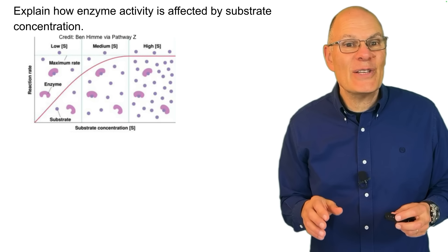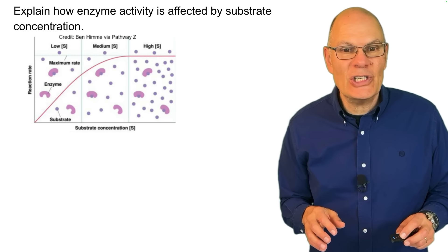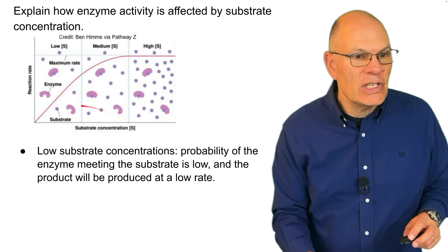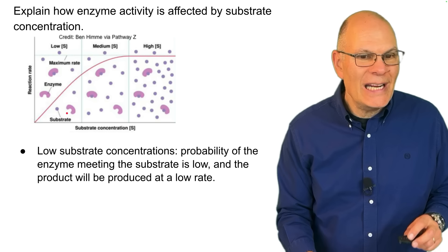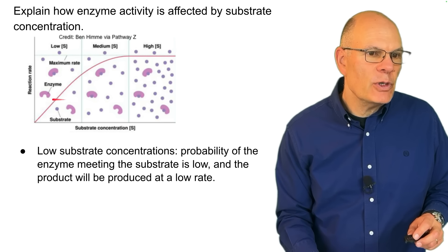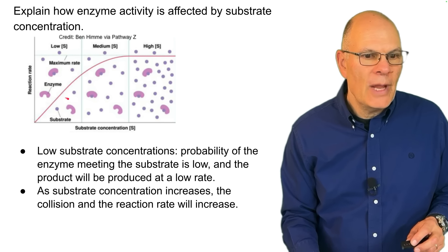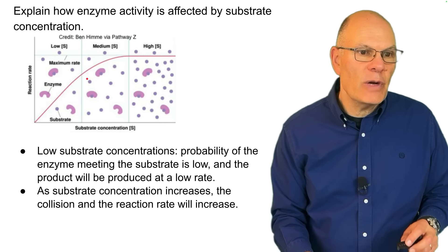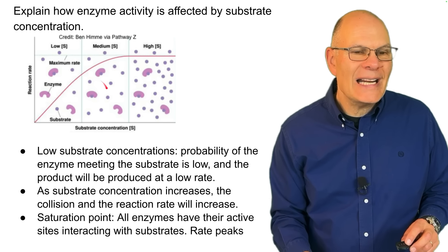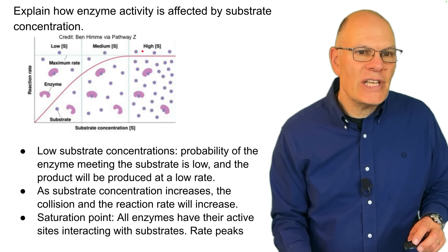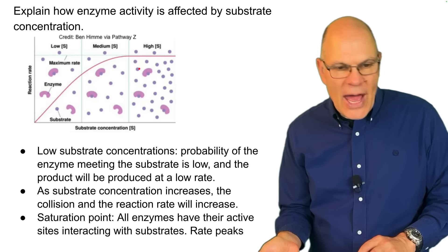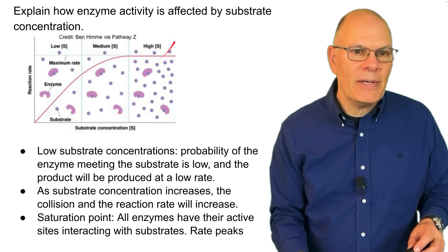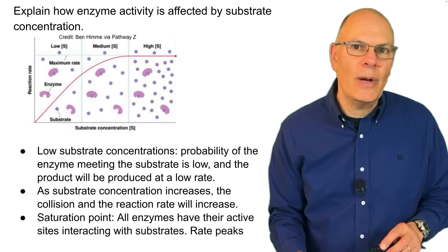Explain how enzyme activity is affected by substrate concentration. With low substrate concentrations, the probability of the enzyme meeting its substrate is low, and the product is produced at a very low rate. As substrate concentration increases, the collision and reaction rate will also increase. But at a certain point, you get to a saturation point where all the enzymes have their active sites interacting with substrates, so there's a peak in the rate and you don't go any higher.